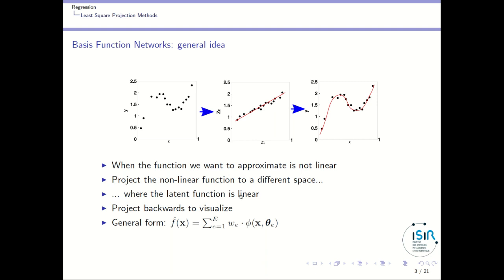So what we do is project the nonlinear function to a different space where the latent function itself is linear, and then project backward to visualize. The general form of this model has basis functions multiplied by weights, and the sum of the basis functions multiplied by the weights gives our function approximation.